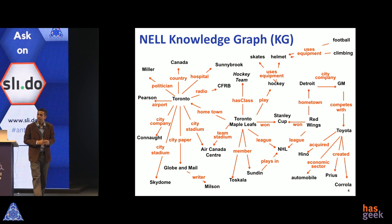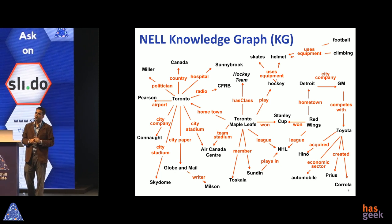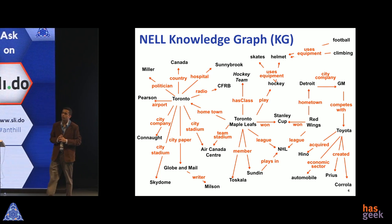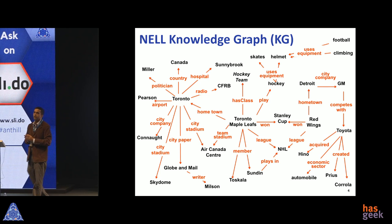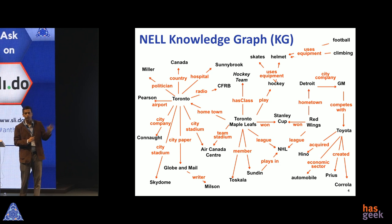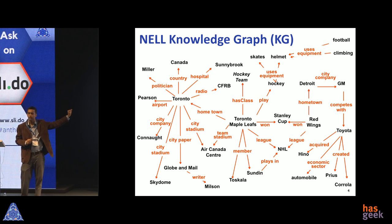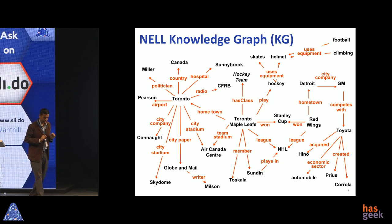The NELL project at CMU — where NELL stands for Never-Ending Language Learning — is an ambitious project trying to read web documents on a continuous basis written in natural language like English. NELL currently focuses on English, and the goal is to read the entire corpus of English web documents and build this kind of structured knowledge graph. This is a fragment of the much bigger graph that NELL has built by running for more than eight years, since January 12, 2010.